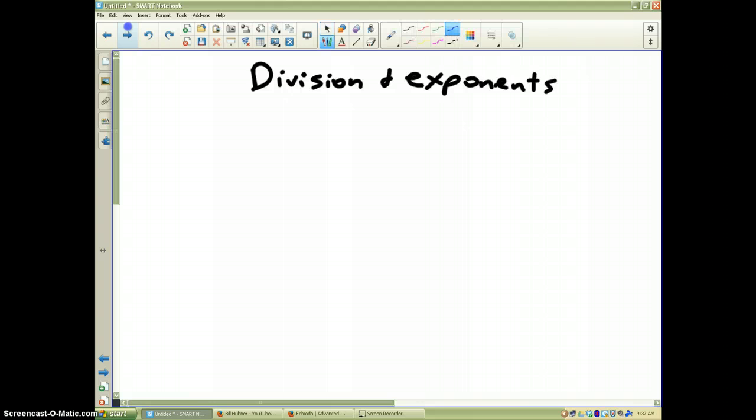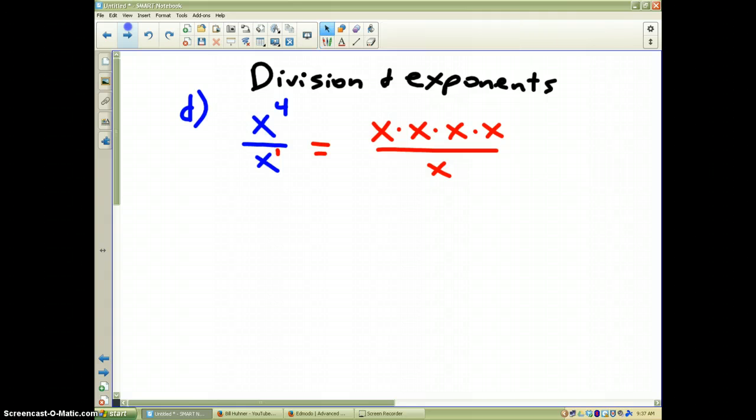Fourth example in this particular section. Let's say that we have x to the fourth divided by x. If we expanded this out, as we did back a couple examples ago, x to the fourth means x times x times x times x. In the denominator, it's x to the first power, that's just 1x. Now, if we reduce, 1x on top would reduce with 1x on the bottom, thus leaving us with x times x times x on the top, which is x to the third.